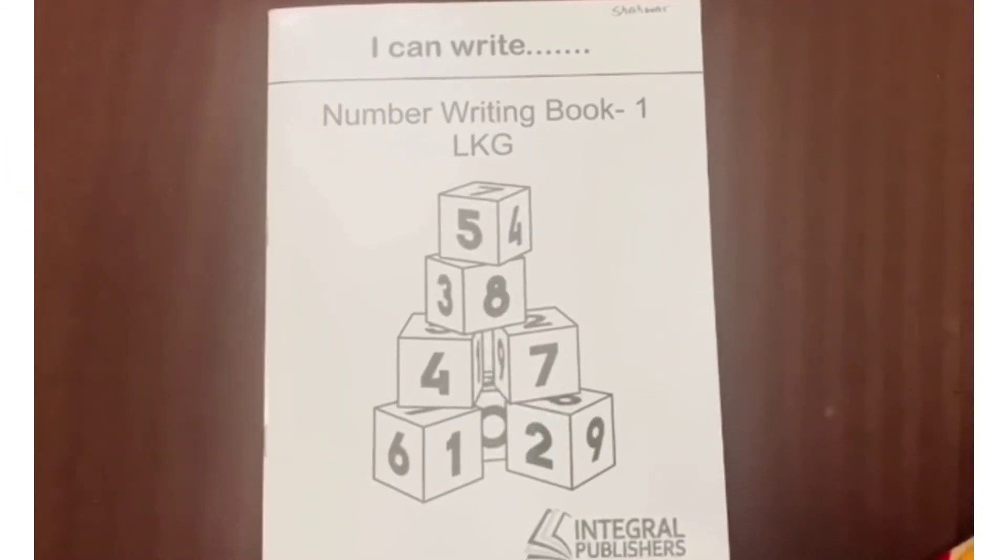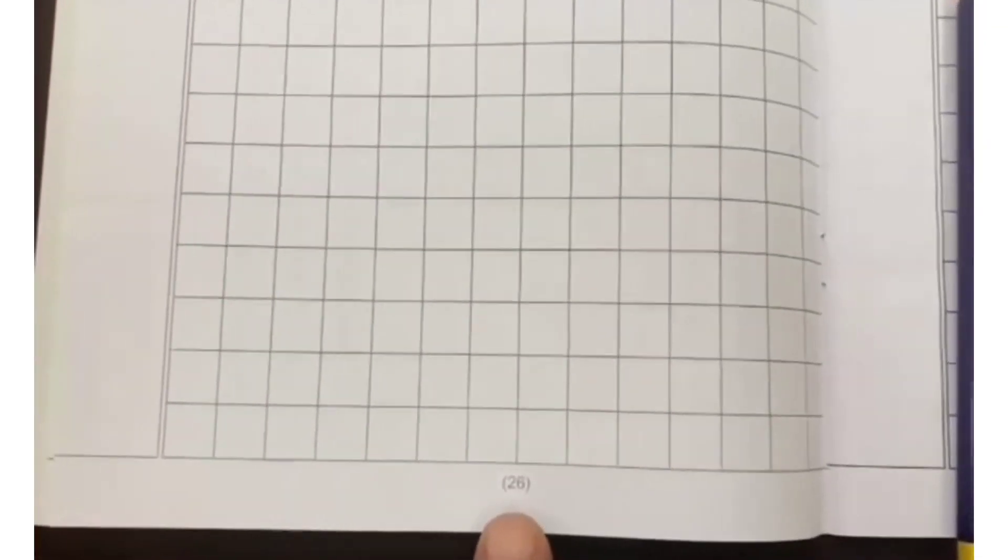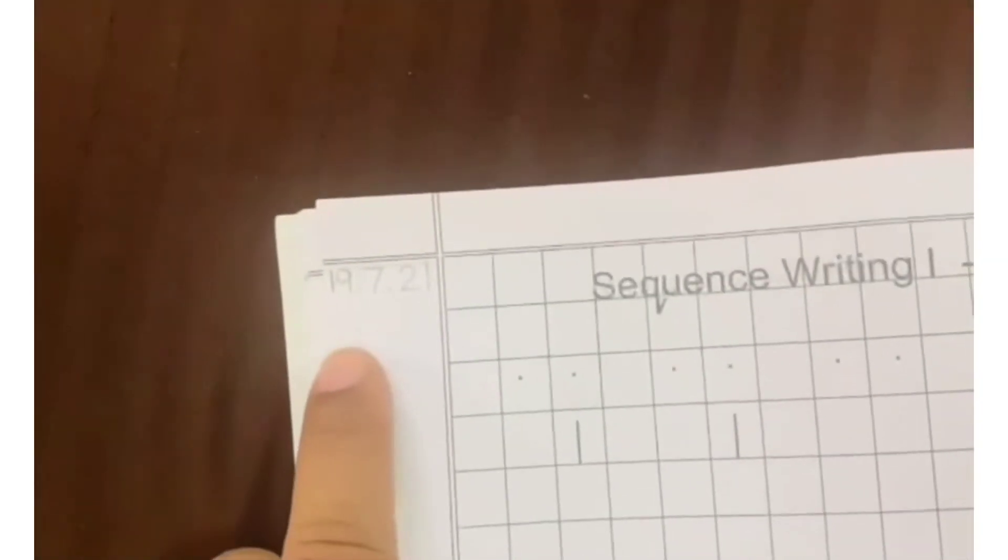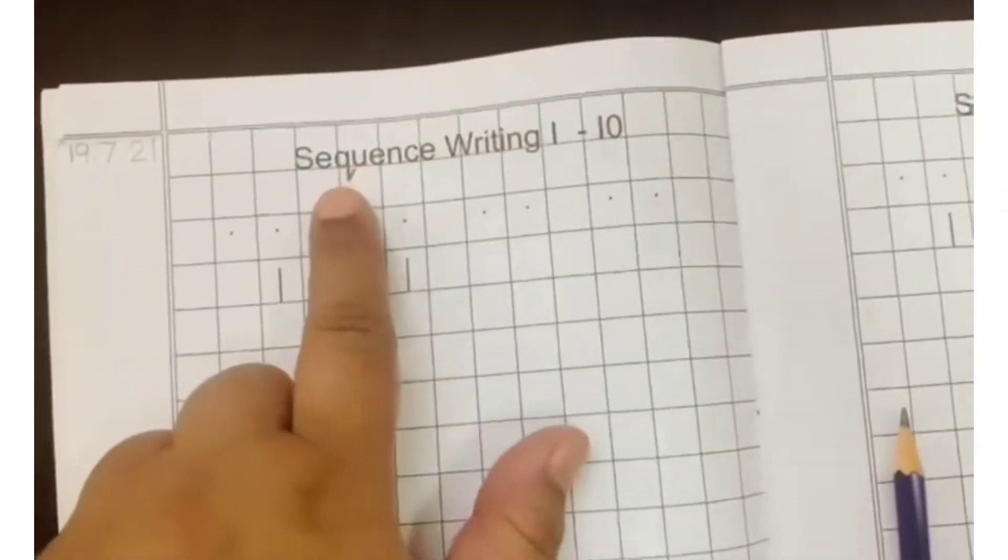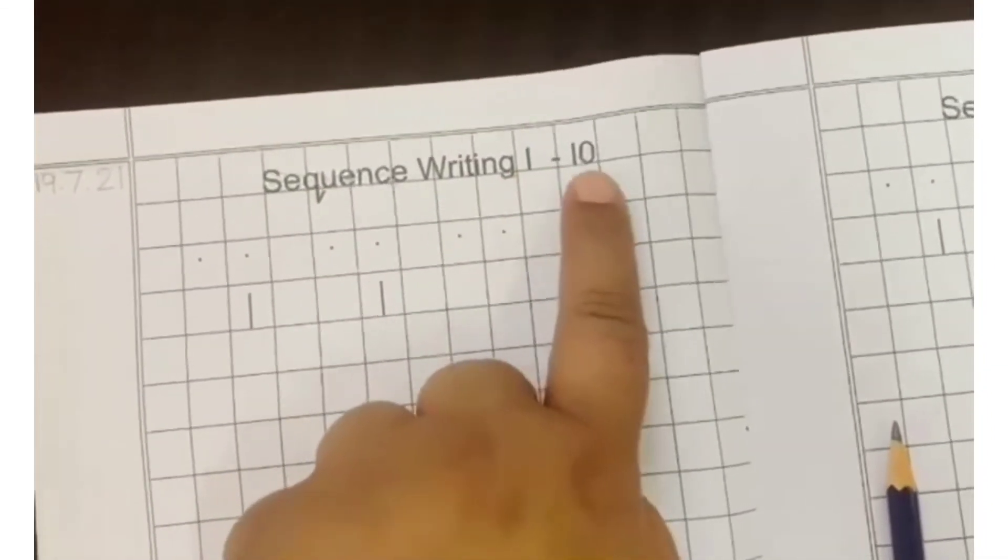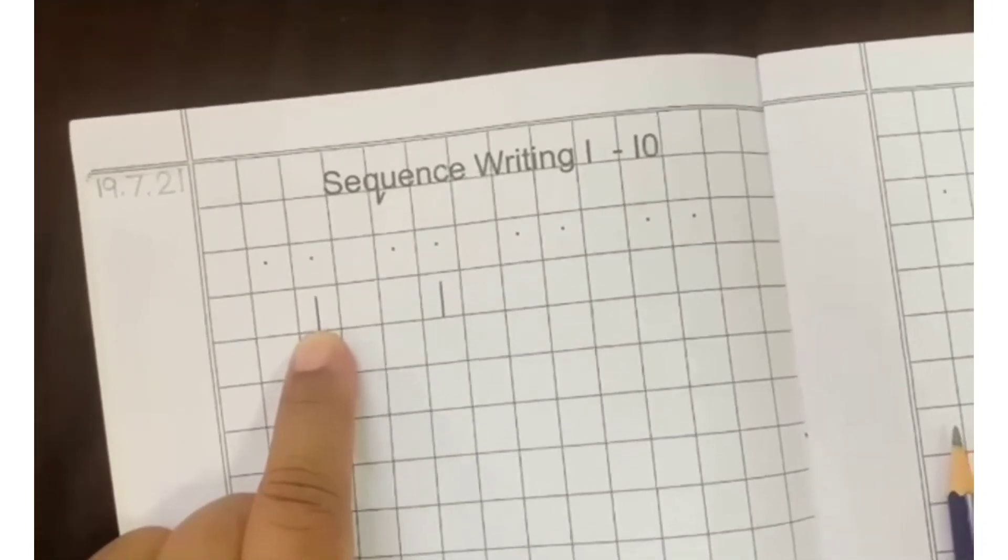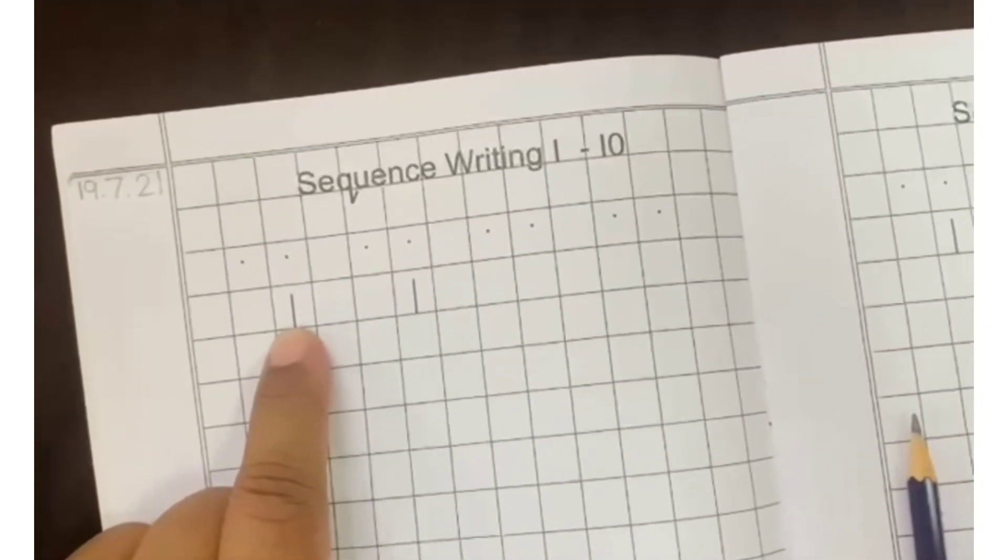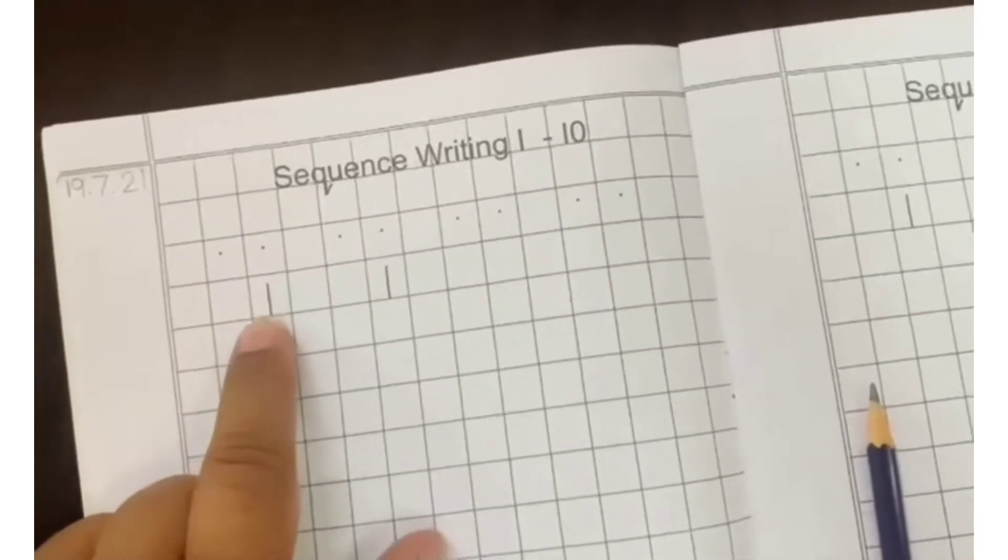Now, open your number writing book 1 to page number 26. First, write the date. That is 19th July 2021. Sequence writing 1 to 10. Now, start writing numbers from 1 to 10 in sequence. In the first two columns, number 1 is written for you.